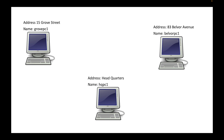For example, if this were an on-premise setup, you might have a machine at 15 Grove Street named 'Grove-PC1', or one at 83 Belvoir Avenue named 'Belvoir-PC1'. If you had a headquarters location, you'd probably call it 'HQ-PC1'. So the name tells you where the machine is located.